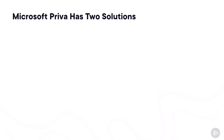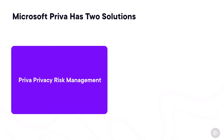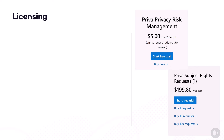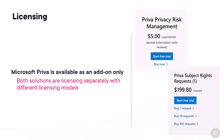Microsoft Priva has two main solutions: Priva Privacy Risk Management and Priva Subject Rights Requests. From a licensing point of view, Microsoft Priva is only available as an add-on, so it's not included in any other Microsoft 365 licenses. Each of the two solutions is licensed separately, and they each have their own licensing model. As always, make sure to check with your licensing professional, as licensing can often change.